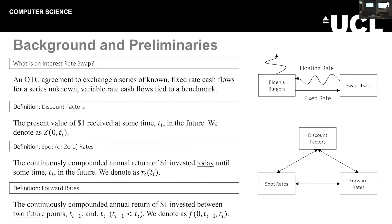Now, there are a couple of other definitions I would like to cover before we move on, first of which being discount factors. This is the present value of $1 received at some point in the future. We also have spot rates. These are the continuously compounded annual returns of $1 invested between two future points. But of course, that rate is known today. And it's also worth noting that given knowledge of one of these, we can completely determine any of the others.